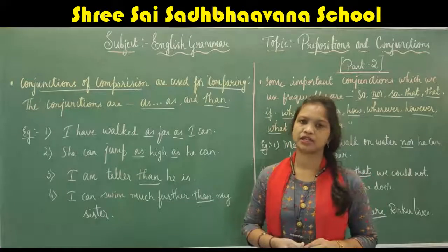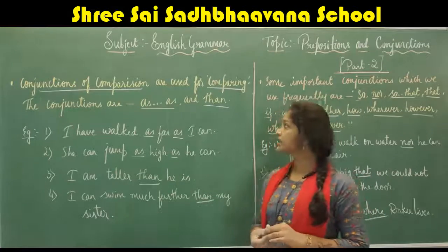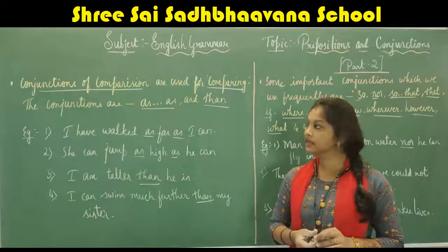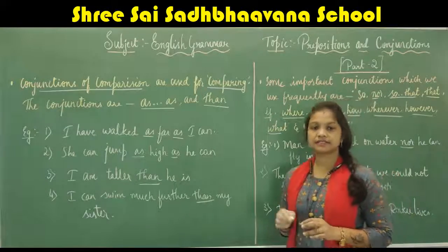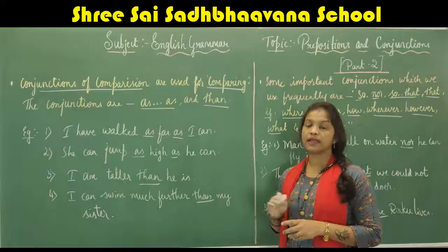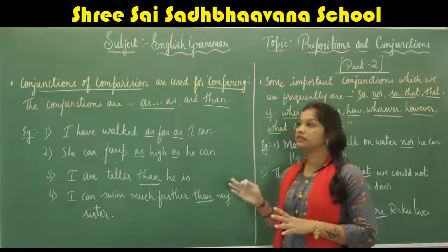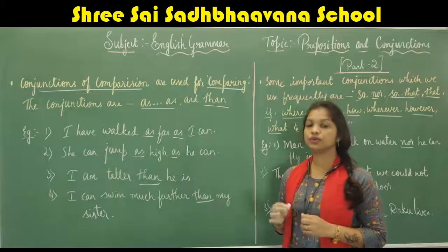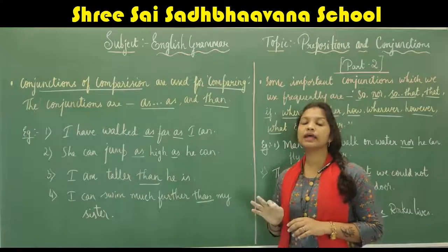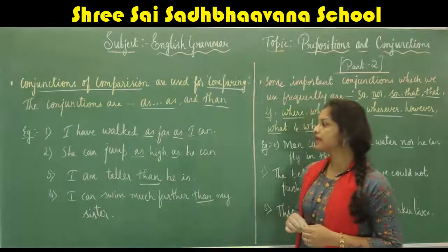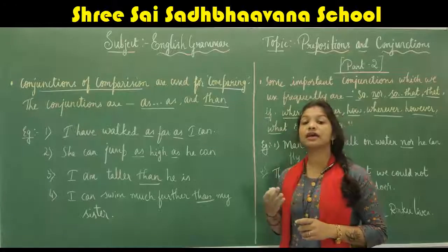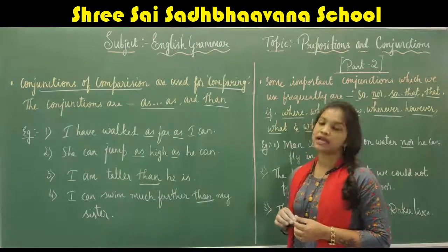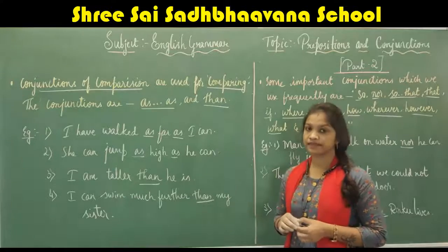Now we move on to conjunctions of comparison. These are used for comparing, and the conjunctions 'as...as' and 'than' are known as conjunctions of comparison. Example: 'I have walked as far as I can.'